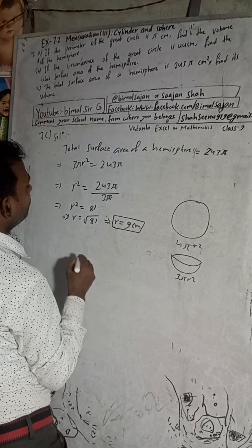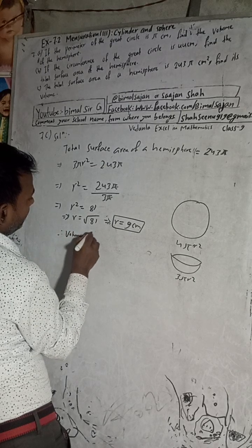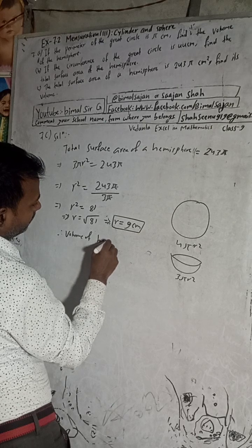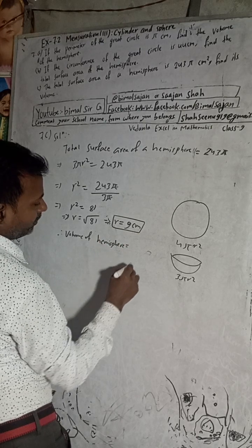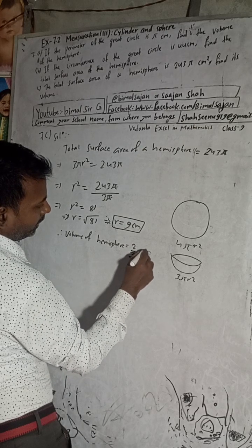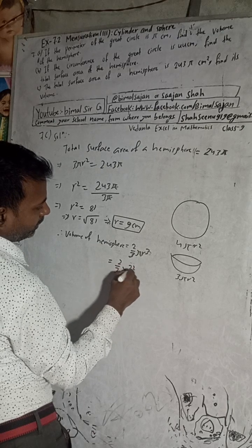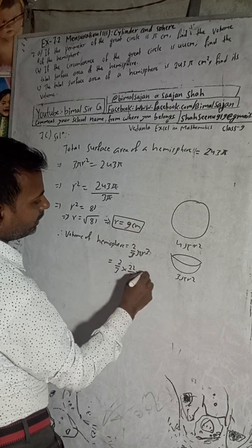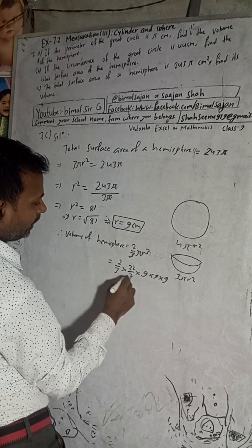So the radius is 9 cm. Now we find the volume of the hemisphere. The formula for the volume of a hemisphere is 2/3 πr³. Using π as 22/7 and r equal to 9, so r cubed means 9 × 9 × 9.